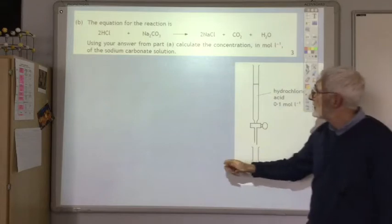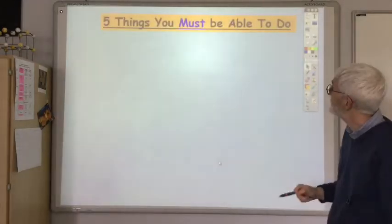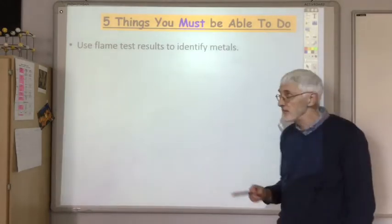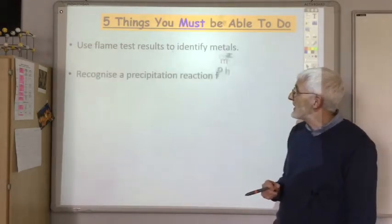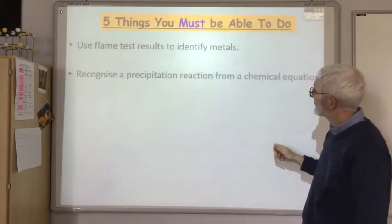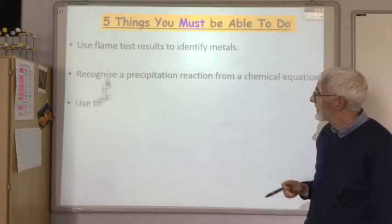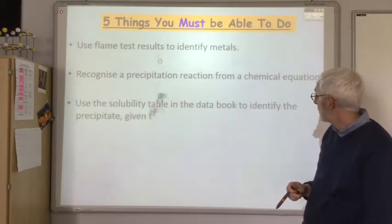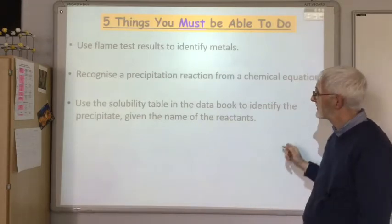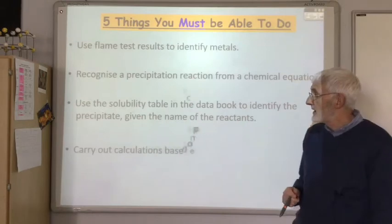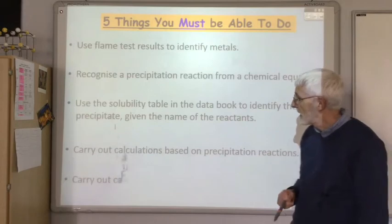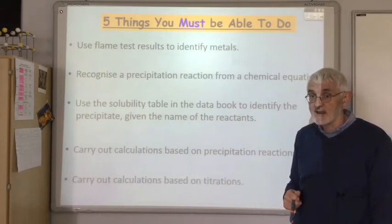To finish up, here are five things you must be able to do: use flame test results to identify metals; recognize a precipitation reaction from a chemical equation; use the solubility table in the data booklet to identify the precipitate given the names of the reactants; carry out calculations based on precipitation reactions; and carry out calculations based on titrations.